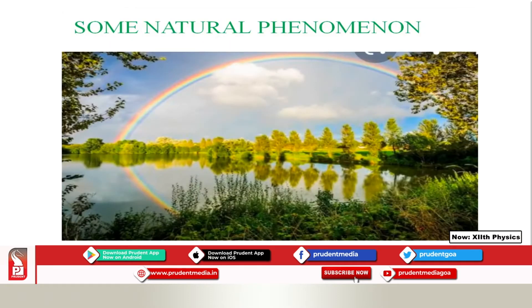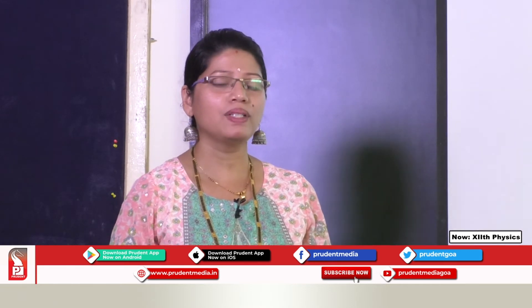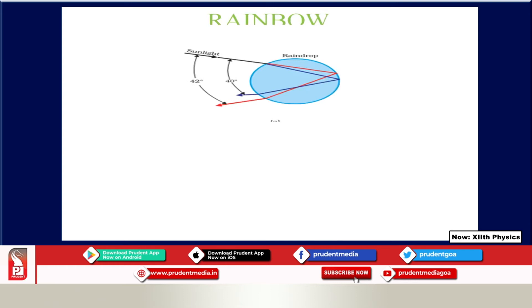What you can see on the screen is a beautiful rainbow. Let us see how it has been formed — physics will answer all your questions. A rainbow is formed when a ray of light strikes a raindrop. There are three things happening: dispersion, refraction, and total internal reflection.